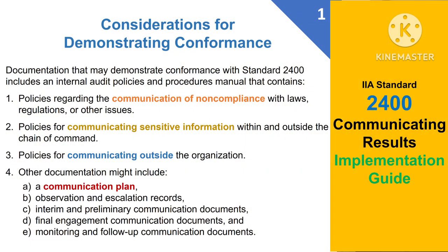To demonstrate conformance with standard 2400 communicating results, we need to have documentation like policies regarding the communication of non-compliance with laws, regulations or other issues, policies for communicating sensitive information within and outside the chain of command, policies for communicating outside the organization, and other documentation might include a communication plan, observation and escalation records, interim and preliminary communication documents, final engagement communication documents, and monitoring and follow-up communication documents.